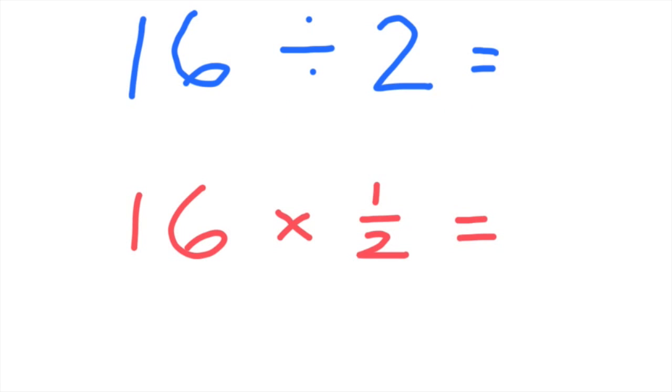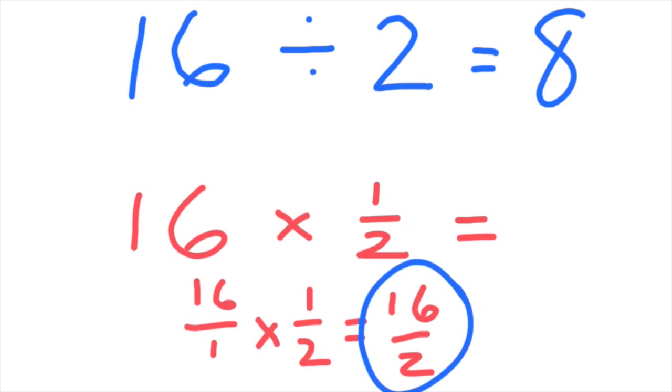which most people can recognize right away as being 8. Here we have 16 times 1 half. You know it already, that's great. If you need to work it through, that's fine. You can go 16 over 1 times 1 over 2 is equal to 16 over 2, and this is an improper fraction. So we say,